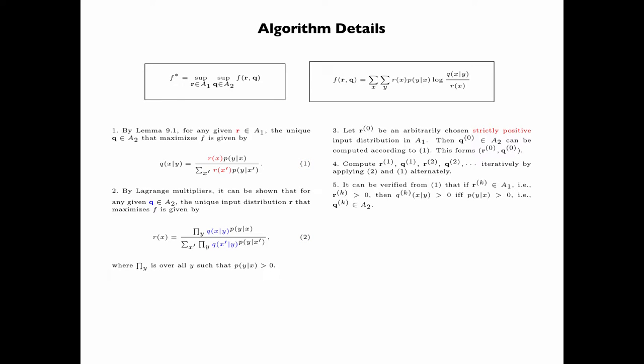It can easily be verified from equation 1 that if Rk is in A1, that is Rk is strictly positive, then Qk(x given y) is greater than 0 if and only if P(y given x) is greater than 0. That is, Qk is in A2.